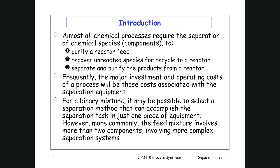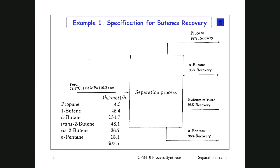For a binary mixture, it may be possible to select a separation method that can accomplish the separation in just one piece of equipment. However, more commonly the feed mixture involves more than two components, requiring more complex separation systems. I'll give you a list of components, vapor pressures so you can work out relative volatilities, and flow rates, because the relative flow rates are also important in deciding what your separation process looks like.